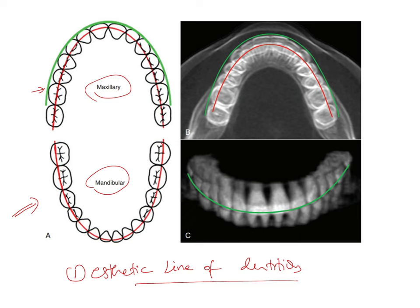The problem with Angle's functional line of occlusion is that when the patient is in occlusion, you are not able to assess this line because it is obscured from view. The aesthetic line of dentition addresses this by joining the facial edges of the maxillary anterior and posterior teeth, which can be viewed even when the patient is in occlusion or has interdigitation of teeth. This line helps assess the aesthetics of the dentition relative to the face.